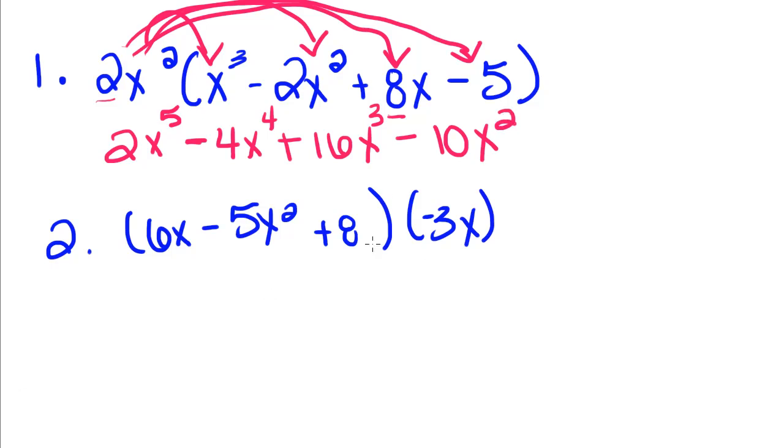I'm going to do the same thing down here. If you notice, this time our monomial is on the left, but that really doesn't change anything at all. We're still going to distribute that negative 3 the same way we do when it's on the right.